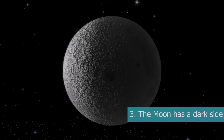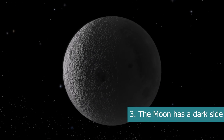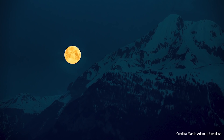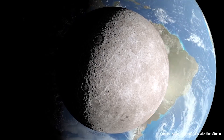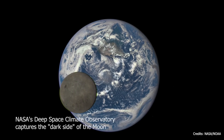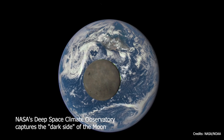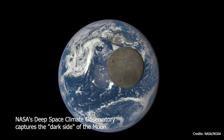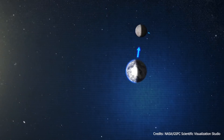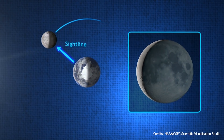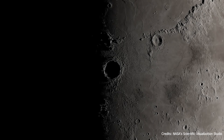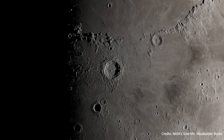The Moon has a dark side. Since the Moon is tidally locked to the Earth and always shows only one side to us, some people think that the other side of the Moon is always dark. However, the far side of the Moon is no more and no less dark than the side we see. At any given time, half of the Moon is illuminated by the Sun, while another half is in darkness. As the Moon is always in motion, it has no permanently dark side.